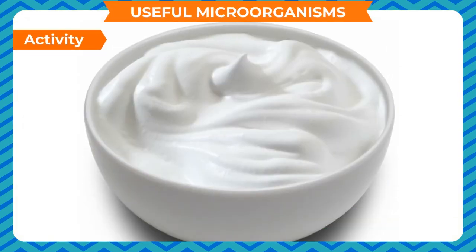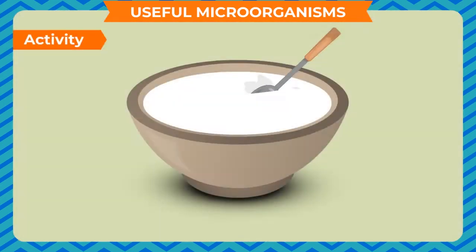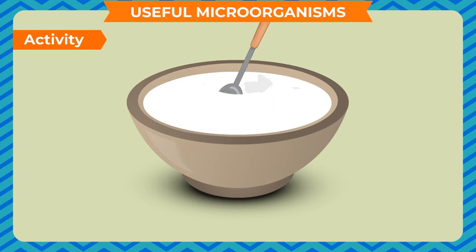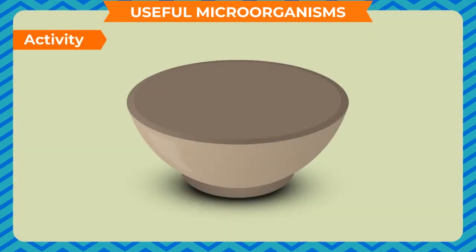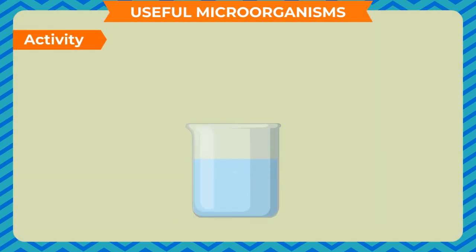To show that bacteria is used in making curd: heat some milk until it is lukewarm (40 to 45°C), add a teaspoon of curd, stir, cover, and leave for 6 to 8 hours — the milk will get converted into curd. To show that fermentation of sugar by yeast produces alcohol: take warm water one-third full in a cup, add 2 to 3 teaspoons of sugar and half a teaspoon of yeast, cover and keep in a warm place for 4 to 5 hours — the solution will smell like alcohol.